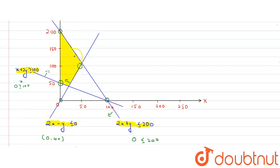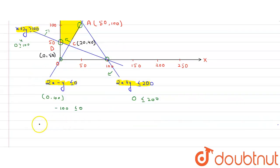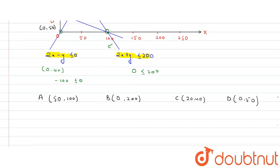The feasible region has corner points labeled A, B, C, and D. Using the graph: A = (50, 100), B = (0, 200), C = (20, 40) — note this is approximate since an accurate graph was not used — and D = (0, 50).